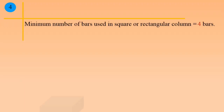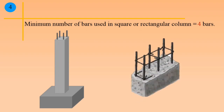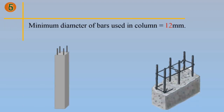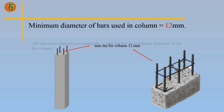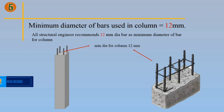Point 4: Minimum number of bars used in a square or rectangular column is 4 bars. Point 5: Minimum diameter of bars used in column is 12 mm. All structural engineers recommend 12 mm diameter bar as the minimum diameter of bar for a column.